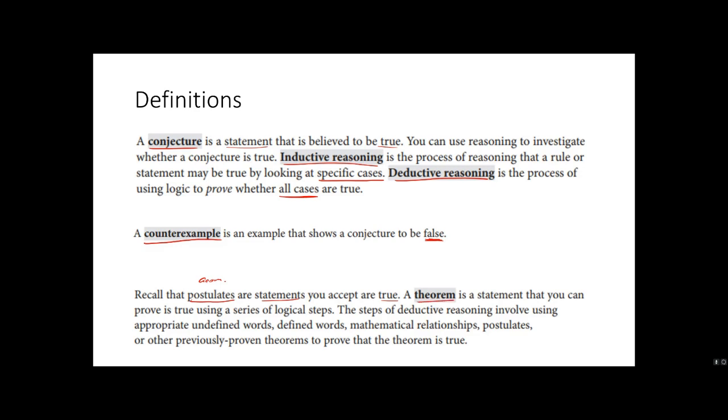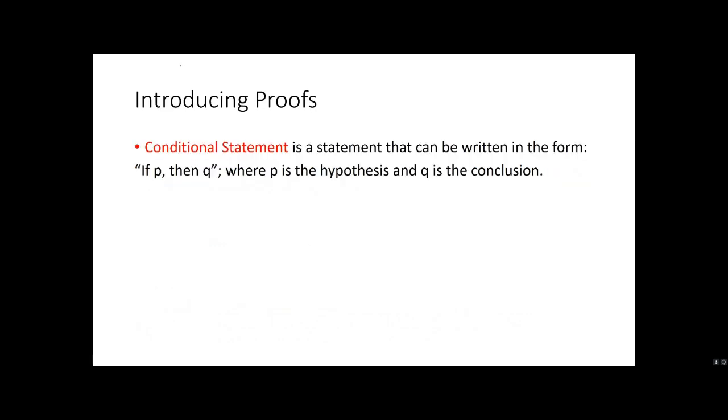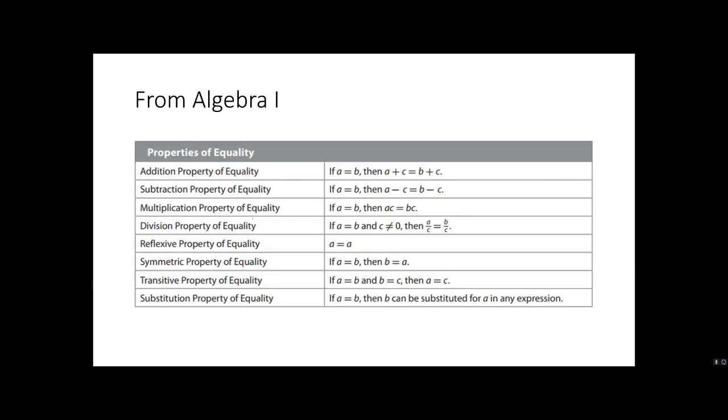A theorem is a statement you can use to prove using a series of logical steps, and you will see theorems a lot in geometry. So let's get into the meat. Introducing proof. A conditional statement is a statement that can be written in the form of if P, then Q. P is the hypothesis, Q is the conclusion. So Rene Descartes, he once said, I think, therefore, I am. Basically, I'm thinking, oh, I'm alive. If P, then Q.